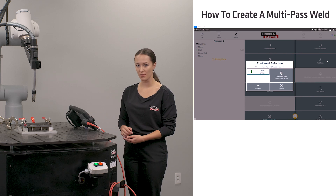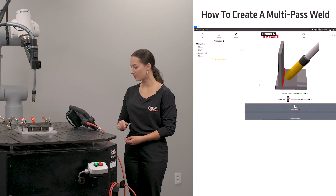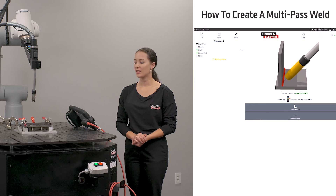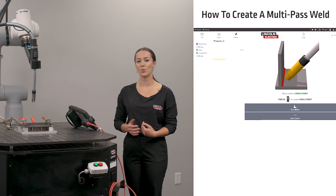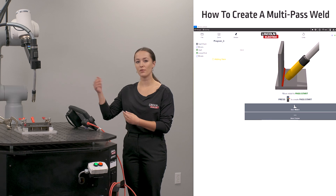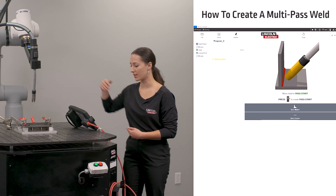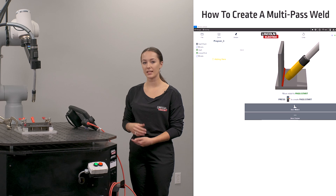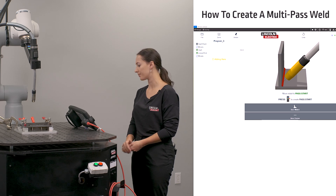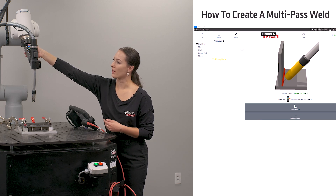Once I have determined the root pass I would like to use, I can hit confirm and then I can move forward to teach my pass. To teach my pass, I can decide what direction I would like this pass to be taught in by moving the robot to the side of the weld I would like to start my pass on. In this case, I'm going to go ahead and teach my pass in the same direction, so it is instructing me to move the robot to my pass start.